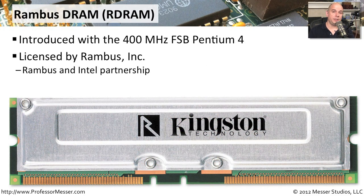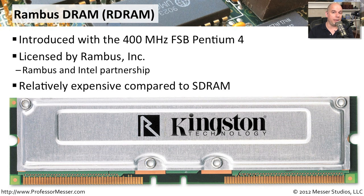As computers matured, we needed memory speed to keep up with faster processors. By the time the Pentium 4 came along, we were hitting the limits of traditional SDRAM. So a third party called Rambus created a new type of memory that could go much faster, and they partnered with Intel to create motherboards requiring this Rambus dynamic random access memory. The advantage was speed, but the disadvantage was cost — licensing requirements made it more expensive than traditional memory. Not all systems used Rambus memory, and we eventually evolved to even faster memory types not created by Rambus.